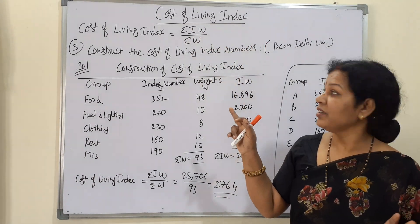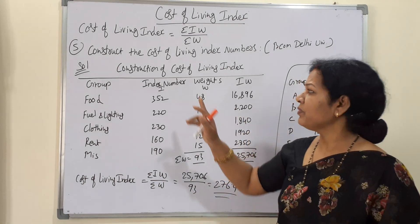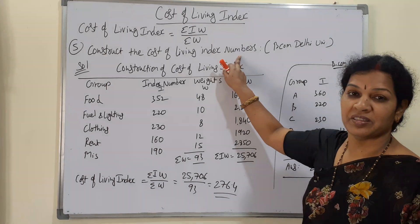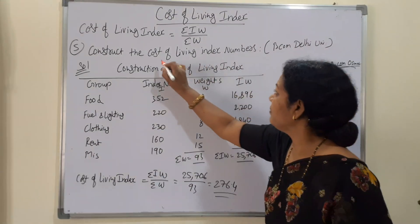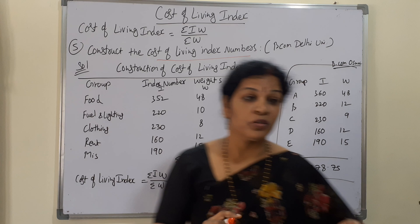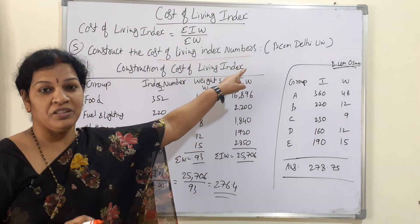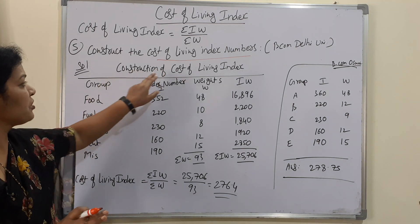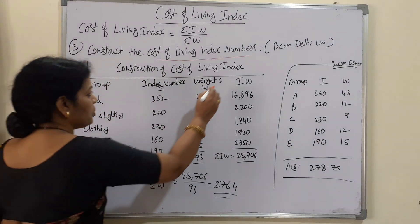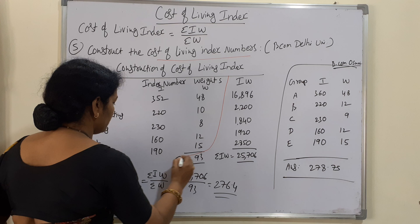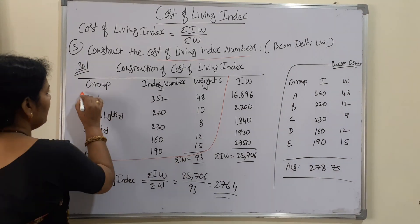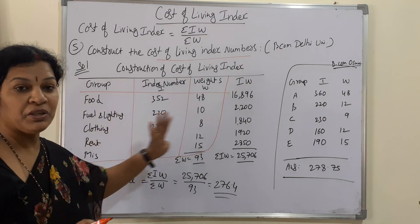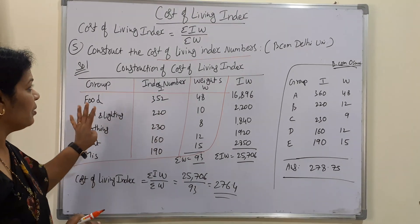We'll take a simple problem — this is the fifth problem. Construct the cost of living index numbers. This problem is from Delhi University. The information given to us includes groups, index numbers, and weights. Using these, we will construct the cost of living index.